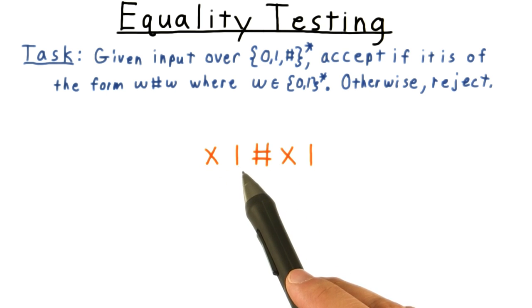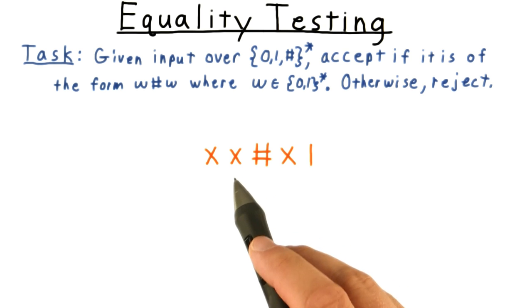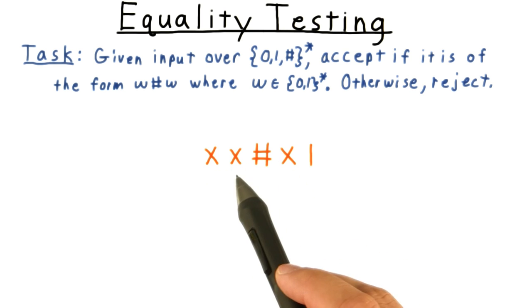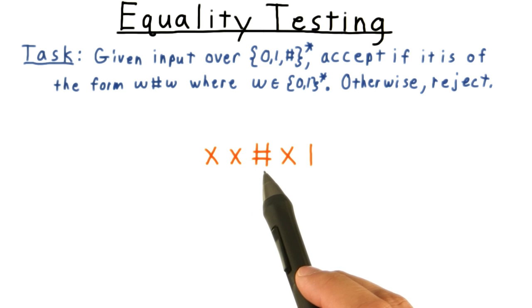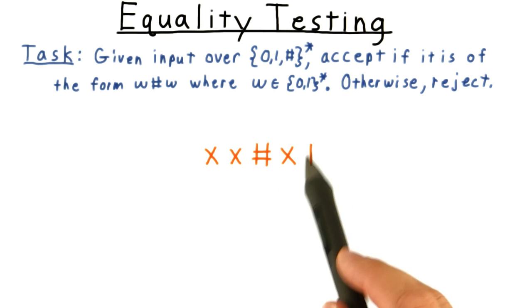And now we're ready to repeat that process. We x out the 1 this time, remembering the fact that it was a 1 in the machine state. We can forget that the previous symbol was a 0 by now. And then we move right, past the hash, past all the x's, to the next non-x symbol that we see.